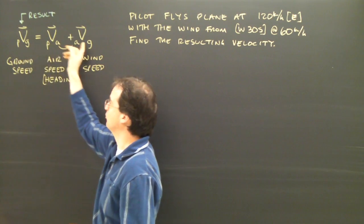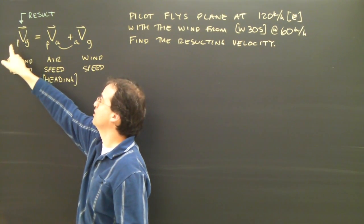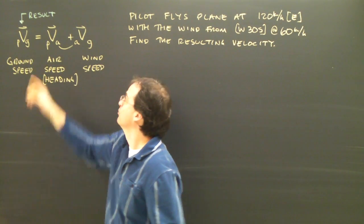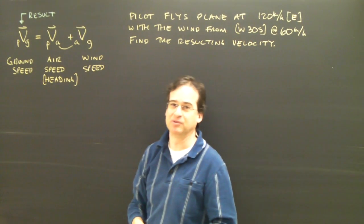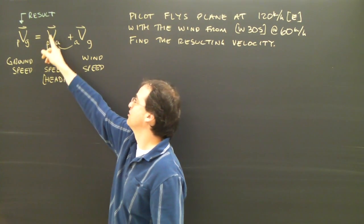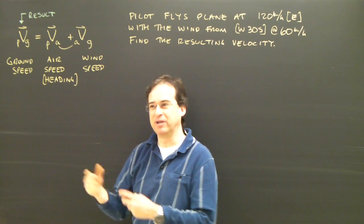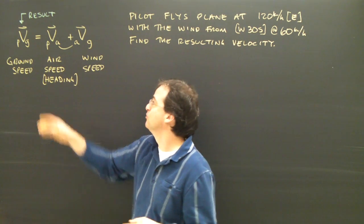So when you use this kind of notation, this means the velocity of the plane relative to the ground, which I'm always going to refer to as what happens with the result. This is the velocity of the plane relative to the air. Because the plane is flying in the air, that's the medium it's moving in,